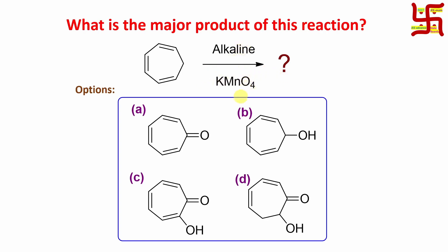Look at the reagent — it is alkaline permanganate (KMnO₄), so it is actually an oxidizing environment. The substrate is cycloheptatriene: a conjugated triene with one sp3 carbon. By the way, if I ask whether this molecule is aromatic or not — actually it is not aromatic. There are some places where you see this is homoaromatic, so some stability is there, but it is not completely stable like benzene. That sp3 carbon is actually the issue.